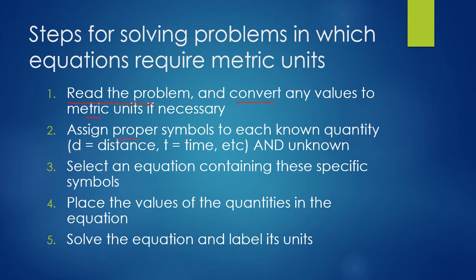Next, make sure you're assigning proper symbols to each known quantity — assign a variable for each number involved. For example, D equals the distance, T equals the time. Also write what the unknown is and put a question mark by it. This helps keep track of all information given and helps you pick the appropriate equation. Then select an equation containing those specific symbols and solve, making sure to use significant figures and label units where necessary.